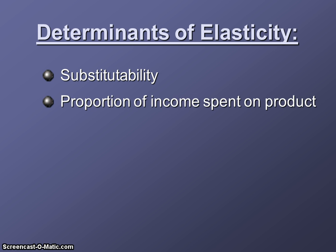Proportion of income spent on the product matters. If you go to the gas station to buy a pack of gum and the price has increased by 20%, you probably won't notice and you'll buy it anyway. But if the price of a new car jumped up 20%, that might cause you to reconsider your purchase. So demand will be more elastic for large purchases that take up a large proportion of income, and more inelastic for small purchases.